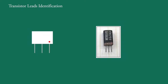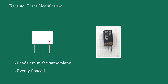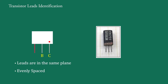In the second system, the leads of a transistor are in the same plane and evenly spaced. The distances between adjacent leads are equal. The central lead is the base. A dot is given on the casing of the transistor, nearer to one of the remaining two leads. The lead identified by the dot is the collector, and the remaining lead is the emitter.